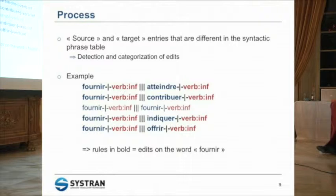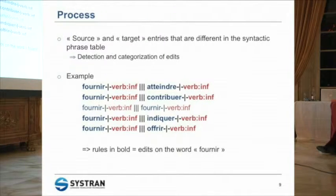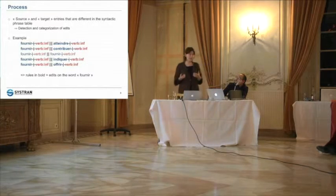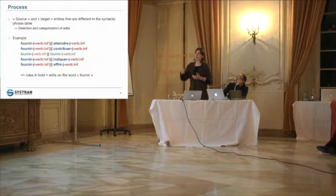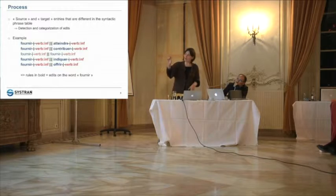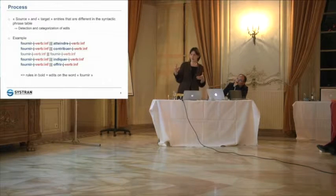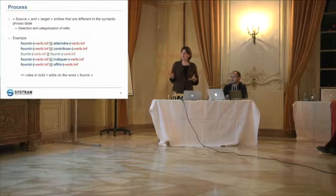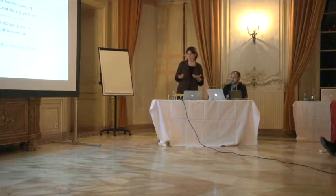We then look at the phrase table we obtain. We parse the table and when we detect source and target entries that are different, it means there was a correction — so we are able to detect and categorize the error. Here is an example of a phrase table in the context of post-edition where both entries are in the target language, and the rules shown in bold indicate that edits on those words were done.